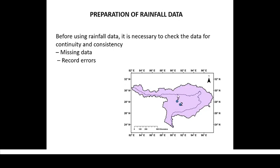For instance, suppose in this basin, initially the rain gauge was installed at station 1, and then after some years it was shifted to station 2 as shown in this figure. In that case, we will have inconsistent data. Or, say in the same station 1, in the last 10 years there was a huge forest in the area, and suddenly there is a huge deforestation in that particular area. Obviously, it will affect the rainfall content of that station, and we will have inconsistent data.